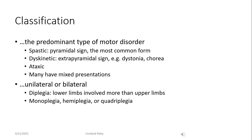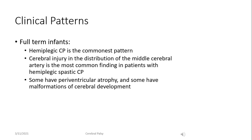The distribution of the motor impairment includes diplegia, which means that the lower limbs are involved more than the upper limbs, or monoplegia, hemiplegia, and quadriplegia. In full-term infants, the most common form is the hemiplegic form, usually secondary to a congenital stroke in the distribution of the middle cerebral artery. Other pathologies may be found on MRIs, such as periventricular atrophy or cerebral malformations.